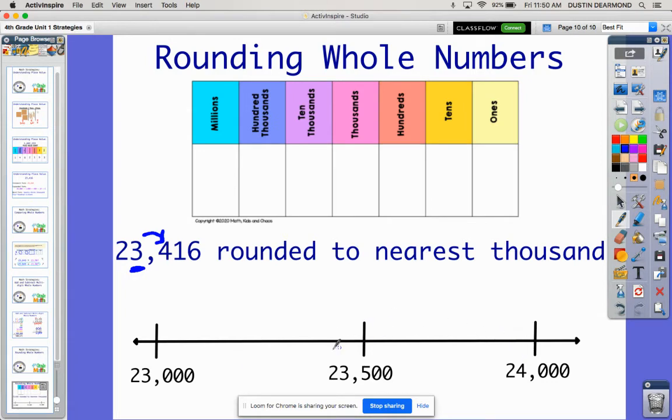Now I did put a number in between because we know halfway in between 23,000 and 24,000 is 23,500. I can count off. Here's the 23,100, 23,200, 300, 400, 23,500, 600, 700, 800, 900, 24,000. We don't have to do all those things because really, we're only focusing on the thousands place. So we just want to put one number kind of in between the two.